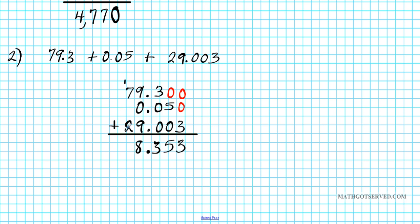7 + 2 is 9. Don't forget the one we carried over, that makes it 10. So our sum is 108.353.